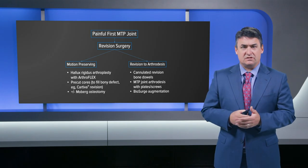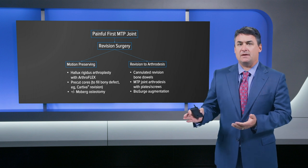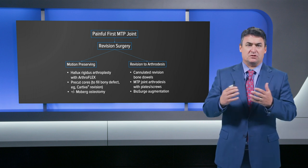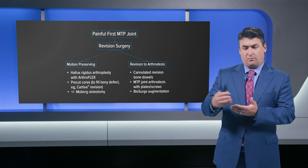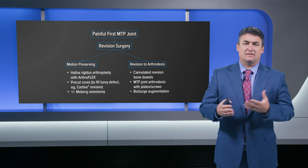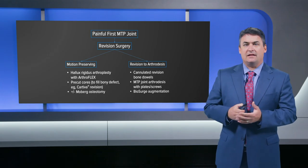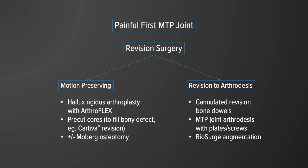For revision surgery, the patient has a painful first MTP joint and has already had one type of surgery. The key question is what we're trying to achieve: does the patient want just one surgery, and do they want to preserve motion? Motion-preserving options include hallux rigidus arthroplasty with Arthroflex and pre-cut cores to fill bony defects. A Moberg osteotomy can be added to increase dorsiflexion. For revision arthrodesis, cannulated revision bone dowels may be needed to maintain length, supplemented with MTP joint arthrodesis plates and screws and Biosurge augmentation to increase fusion chances.